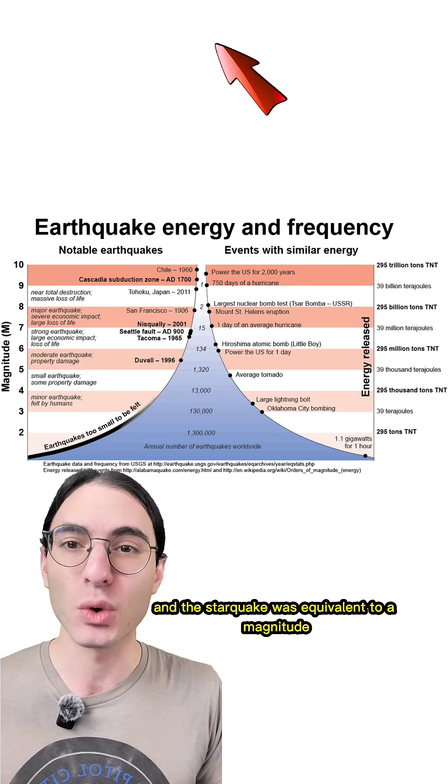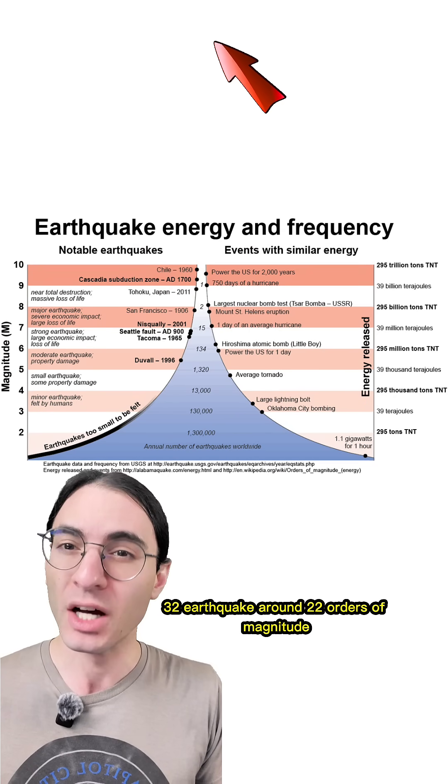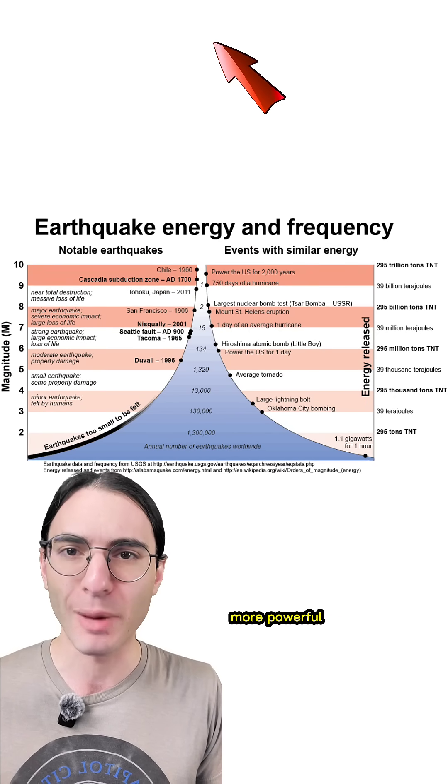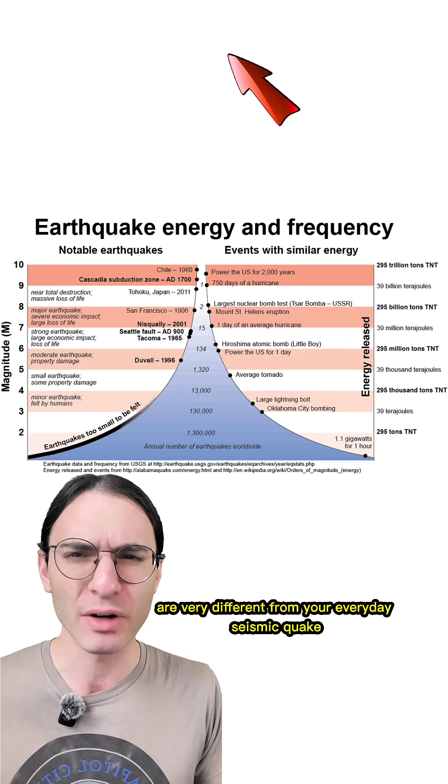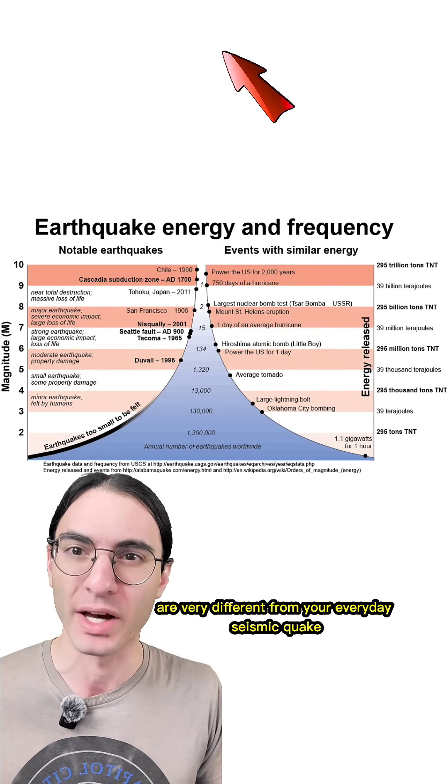And the starquake was equivalent to a magnitude 32 earthquake, around 22 orders of magnitude more powerful than the most devastating earthquake ever. But the cause of the starquake and its implications are very different from your everyday seismic quake.